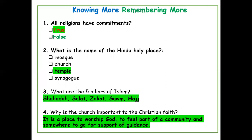Number three: the five pillars of Islam are the Shahada, Salat, Zakat, Sawm, and the Hajj. Number four: why is the church important to the Christian faith? It's a place of worship for God, it enables Christians to feel part of a community, it's somewhere for them to go for guidance and support, and people also go to church for communion.